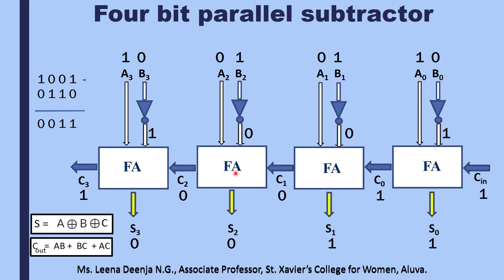For the third full adder, inputs are 0, 0, and carry-in=0. There are no 1s, so S2=0, and carry-out is also 0. For the last full adder, carry-in C2 is 0, and inputs are A=1, B=1. There are an even number of 1s, so S3=0. For carry-out: 1 AND 1 is 1, 1 AND 0 is 0, 1 AND 0 is 0, so carry-out is 1. We discard this carry. Our output is S3 S2 S1 S0 = 0011, which is the same as 0011 from direct subtraction.